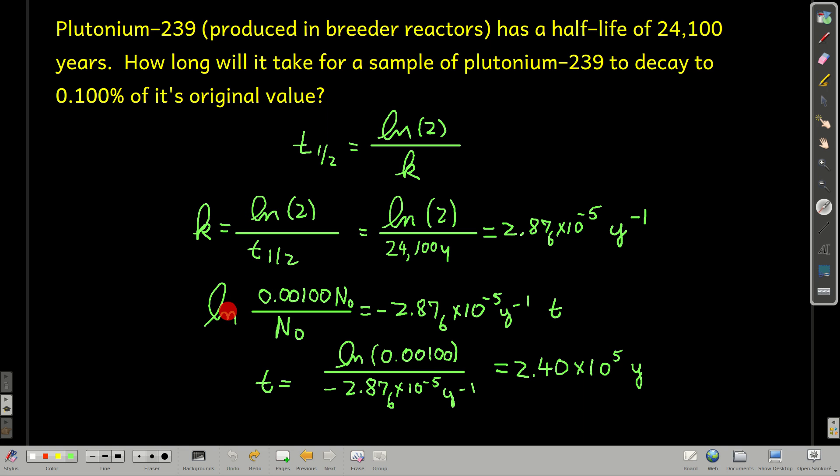Now, for the time that it takes for a sample to decay to 0.1%, 0.1% is 0.001 of the original amount. So 0.00100 times n0 over n0, n0's cancel. Natural log of that equals negative k, now that we know k, times the time. Solve for t, rearrange a little bit. t equals natural log of 0.00100 over this. And we get about 240,000 years, 2.40 times 10 to the fifth years. That's a long time.